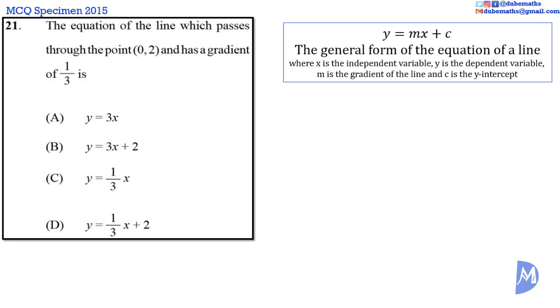The point (0, 2) lies on the Y-axis where Y equals 2. Thus, the Y-intercept is 2. Therefore, the equation of this line is Y = (1/3)X + 2. The answer is D.